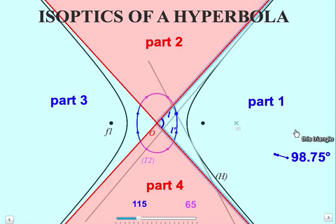So for the isoptics of a hyperbola, you can see one of this isoptic, this one corresponding to this level, the blue part to this level, and the purple part to this level.